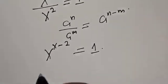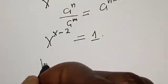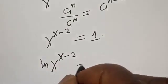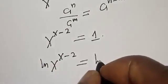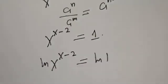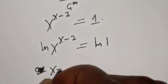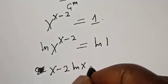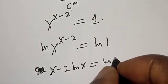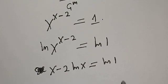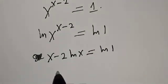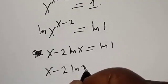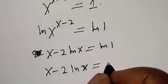Now let's take the log of both sides. We have the natural log of s raised to power s minus two is equal to the natural log of one. Then we have s minus two times the natural log of s is equal to the natural log of one. And since the natural log of one is zero, we have s minus two times the natural log of s is equal to zero.